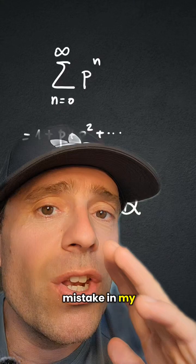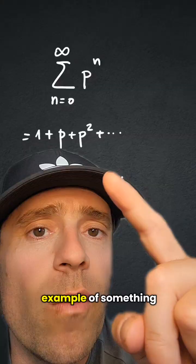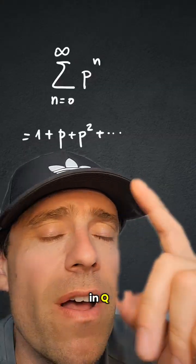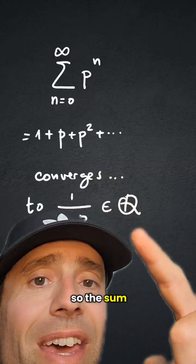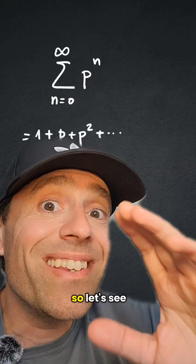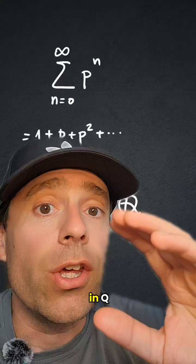By the way, I made a mistake in my video about real analysis as scam, and I mentioned this as an example of something that is in Q_p but not in Q, but that's wrong because this is clearly geometric, so the sum is a rational number. So let's see some examples of numbers in Q_p that are not in Q.